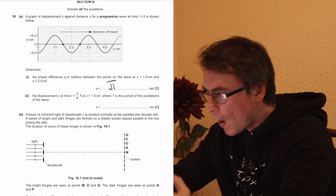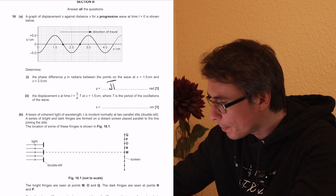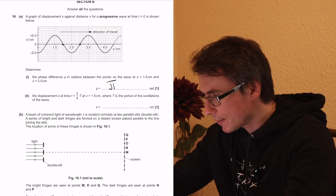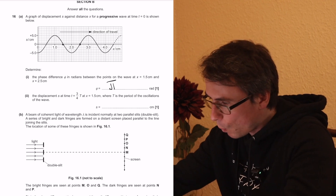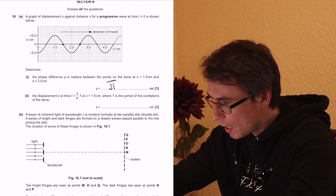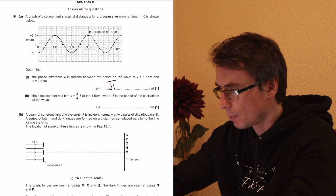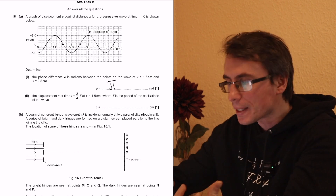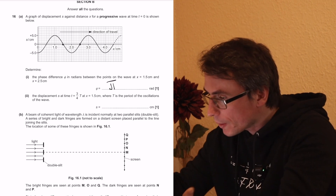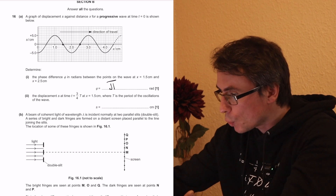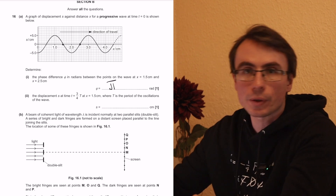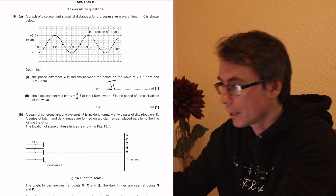The examiners' report identified the next part as challenging. We need to find the displacement S at time T equal to three-quarters T at X equal to 1.5 centimetres. In other words, they're asking what's going to happen to this point three-quarters of a time period later.